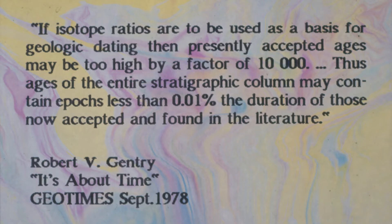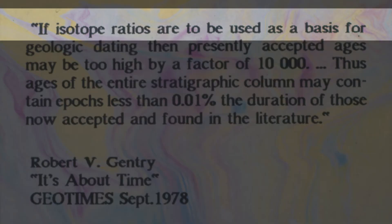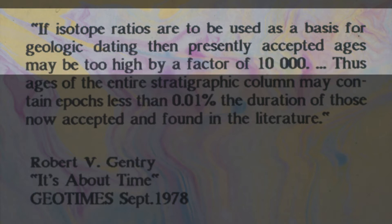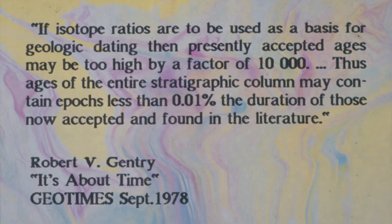Uranium-lead said it was 4,000 million years since the lava was poured out. That reminds me of Robert Gentry's statement at the Louisiana State University meeting: if isotope ratios are to be used as a basis for geologic dating, then presently accepted ages may be too high by a factor of 10,000. The Hawaii dates were wrong by factors ranging from 600,000 to 40 million.